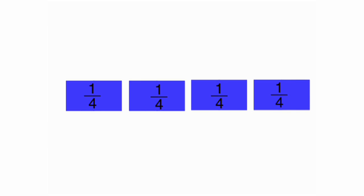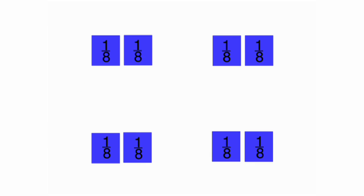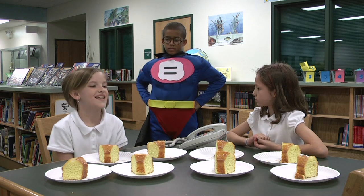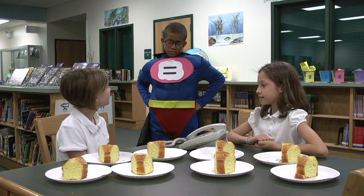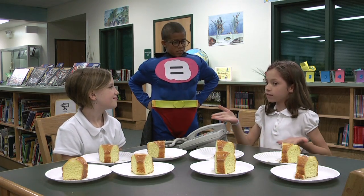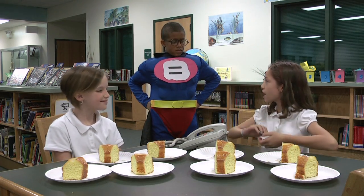Since you have more guests coming, you'll need to cut your cake into more pieces. If we cut each of your pieces in half, we will have eight pieces. That means that one-fourth is equal to two-eighths. That's great, Captain Equivalent. Yeah, thanks — now we have enough pieces for everyone.